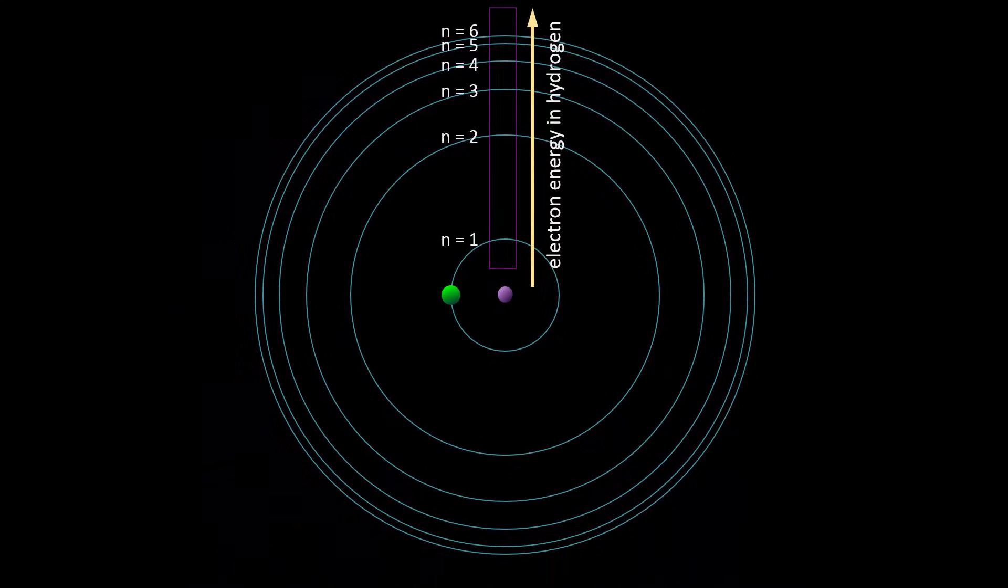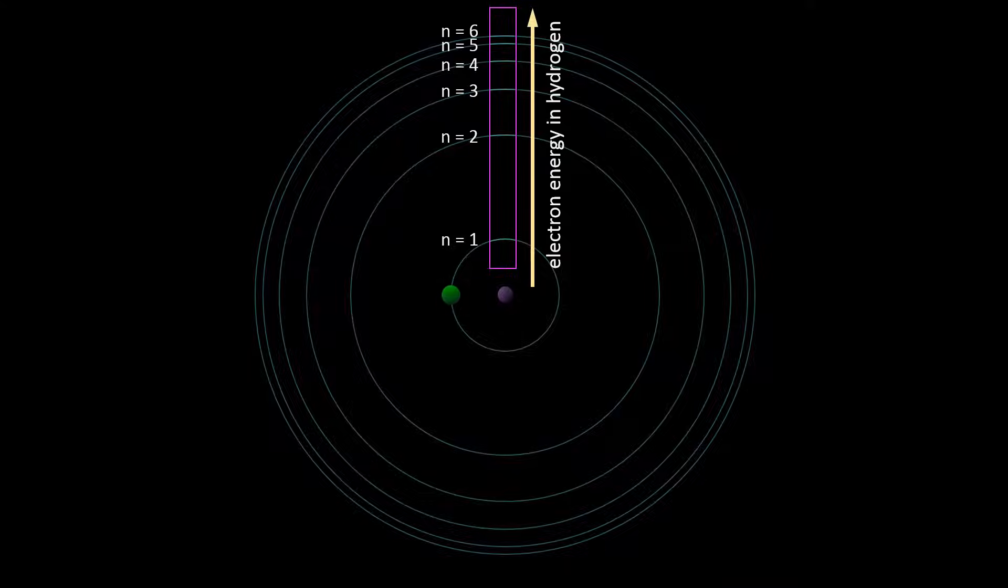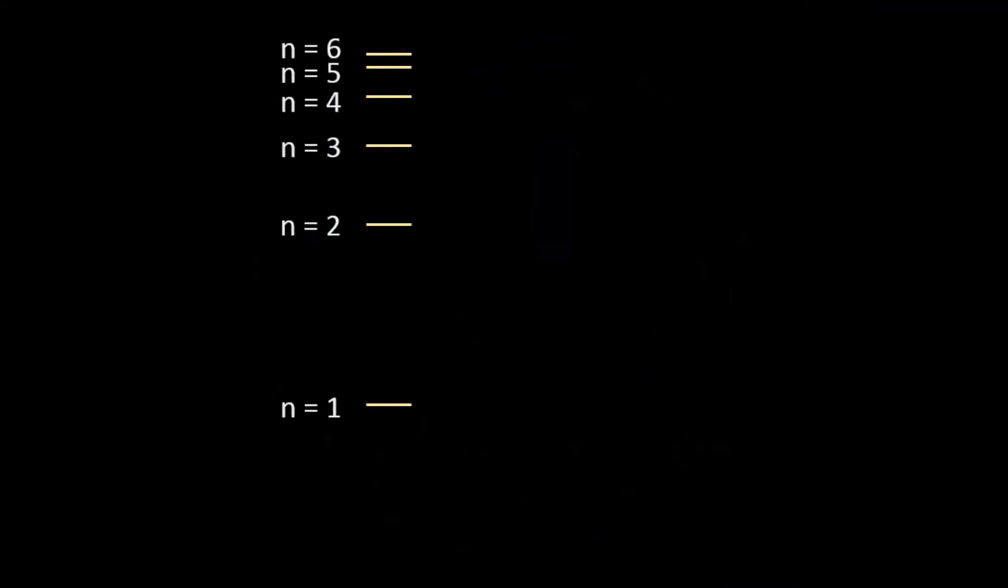If we focus on a section of the orbits, we get a diagram of the allowed electron energies in hydrogen. Bohr found that these energies give us hydrogen's emission spectrum.